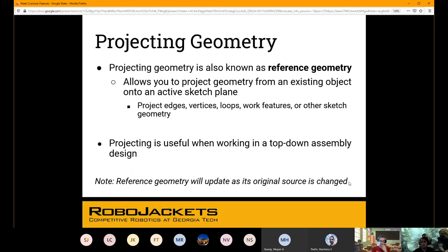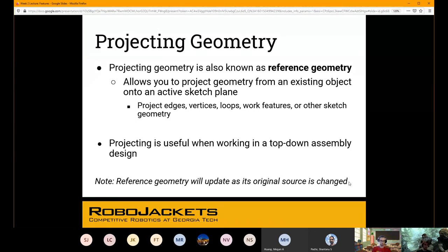Projecting geometry. This is probably going to be one of your most powerful tools using Inventor, because it allows you to take existing geometry that you've done for some other feature, sketch, or existing part and bring it into this new sketch you're doing. Basically, if I have an existing cylinder and I want to use the radius of that cylinder in a new circle, I don't have to recreate that circle — I can just project it up into my new sketch and continue using it.